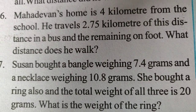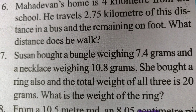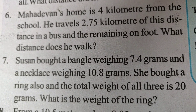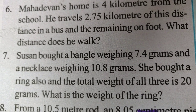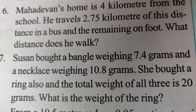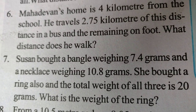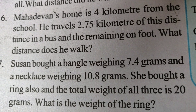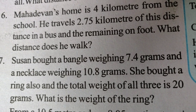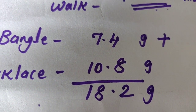Question 7. Susan bought a bangle weighing 7.4 grams and a necklace weighing 10.8 grams. She also bought a ring, and the total weight of all three items is 20 grams. What is the weight of the ring? First we add the bangle and necklace: 7.4 plus 10.8 equals 18.2 grams.